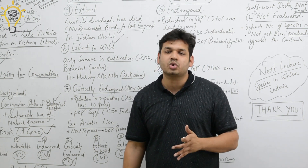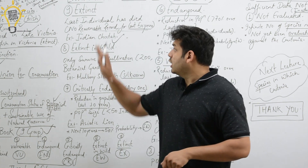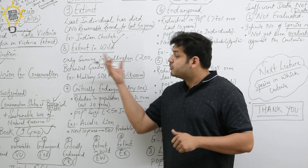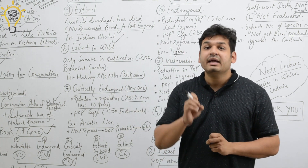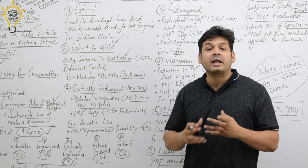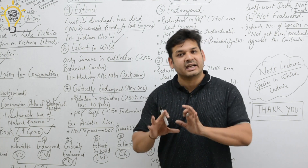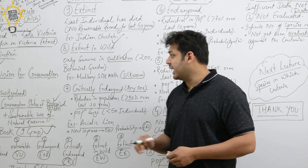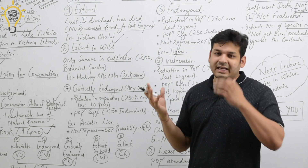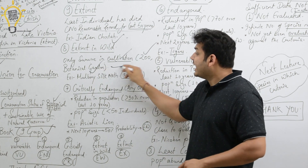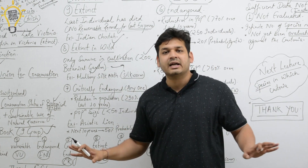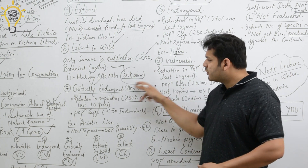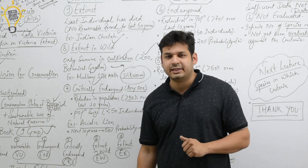The 8th category is Extinct in Wild. Here also the species has disappeared, but they have been conserved — in zoos or botanical gardens. It means they are extinct in the wild, in jungles, but they are still surviving in cultivations like zoos and botanical gardens. They are only surviving in captivity. Example: the mulberry silkworm is an example of a species that is extinct in wild.